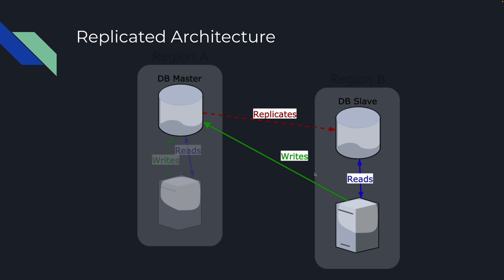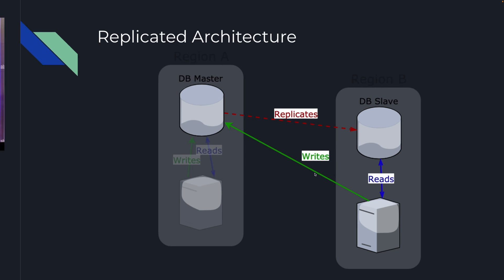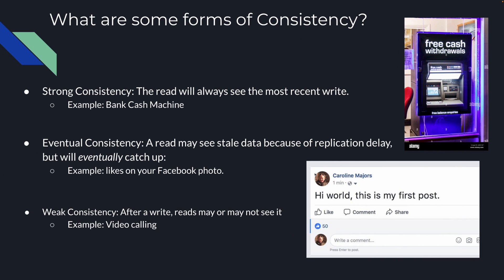And this is what the idea of consistency is all about. So what are some forms of consistency? We can have strong consistency, which means the read is always going to see the most recent write. An example of this is a bank cash machine. Let's think about why strong consistency is important here.